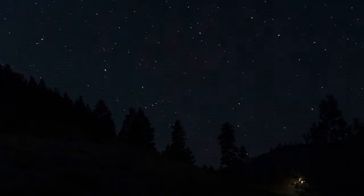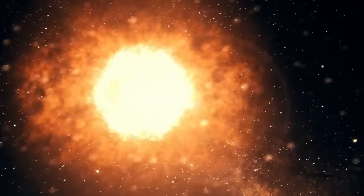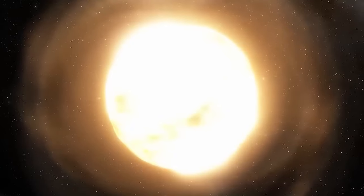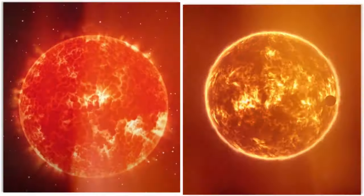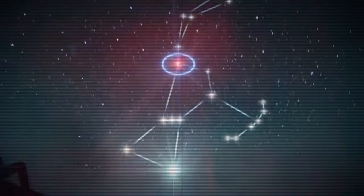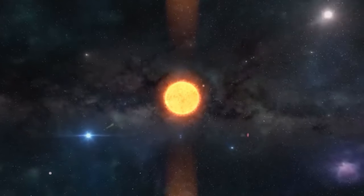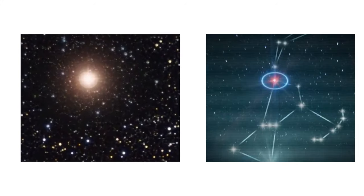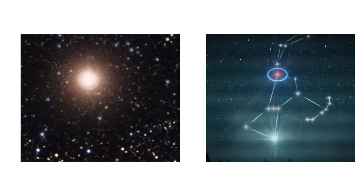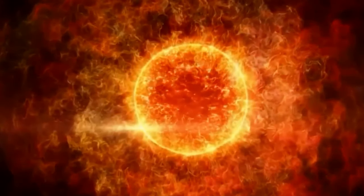About Betelgeuse. The Orion constellation is home to the red, massive star Betelgeuse. According to astrologers, it is regarded as the tenth brightest star in the sky, although on occasion it seems significantly brighter, rising to second or even first position among the stars in Orion. Almost every person on Earth may view the heavenly jewel Betelgeuse shining in the night sky. Because of its prominent location in the Orion constellation and its vivid orange-red color, it is one of the most easily identifiable stars.